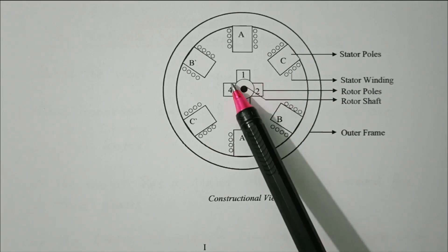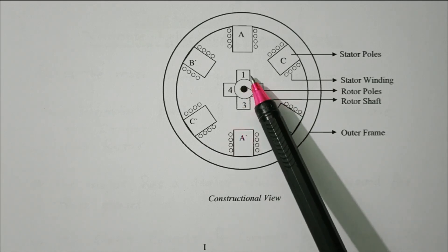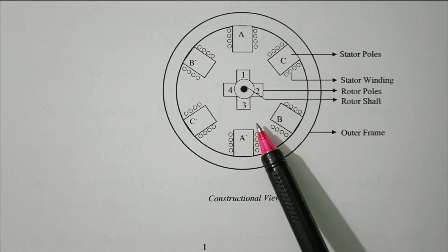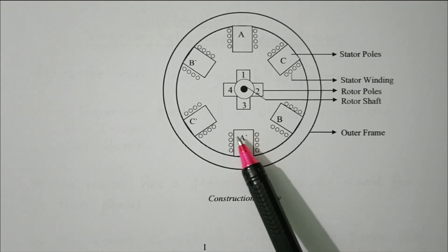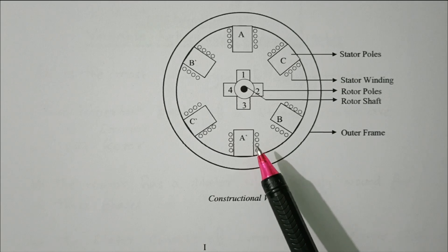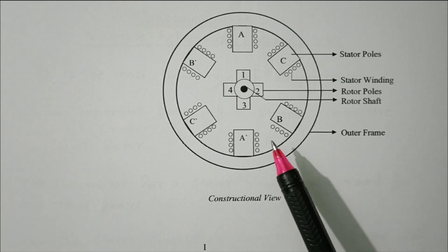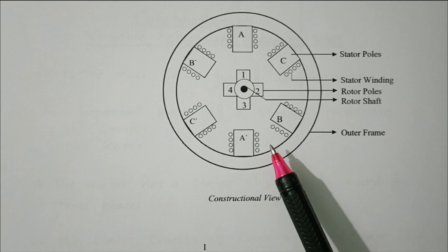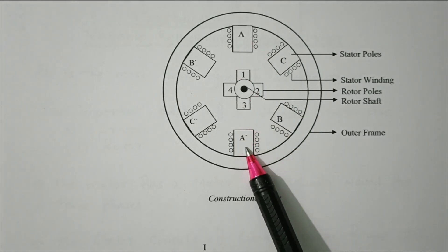The numbers 1, 2, 3, 4 represent rotor poles — four rotor poles are available. The A A-dash, B B-dash, and C C-dash series coils are excited by separate switches S1, S2, S3. As we know, a stepper motor is not a continuous rotating motor; continuous supply is not given. We give pulses through the switches. At the beginning, the A A-dash coils are excited.